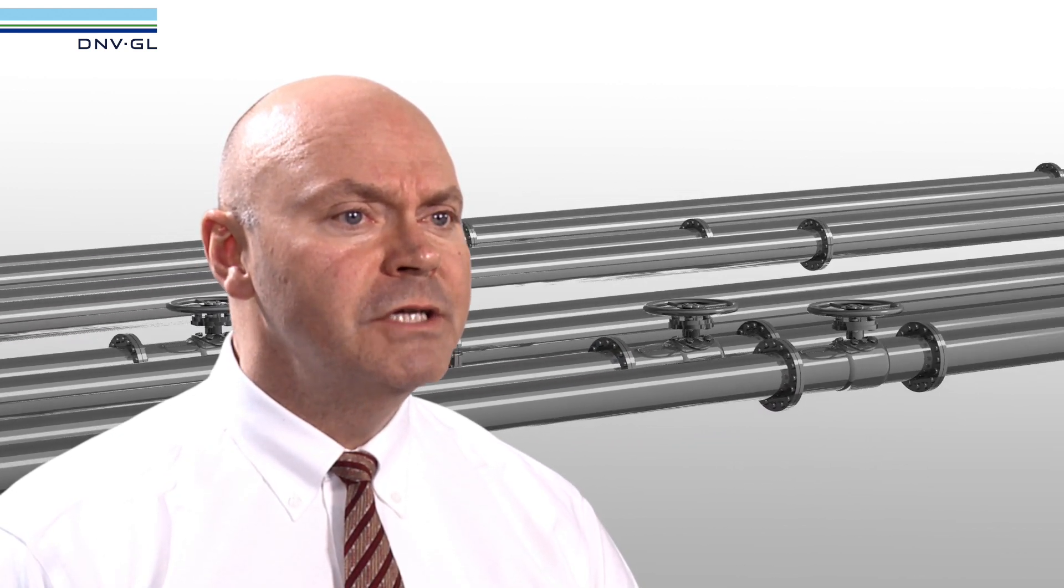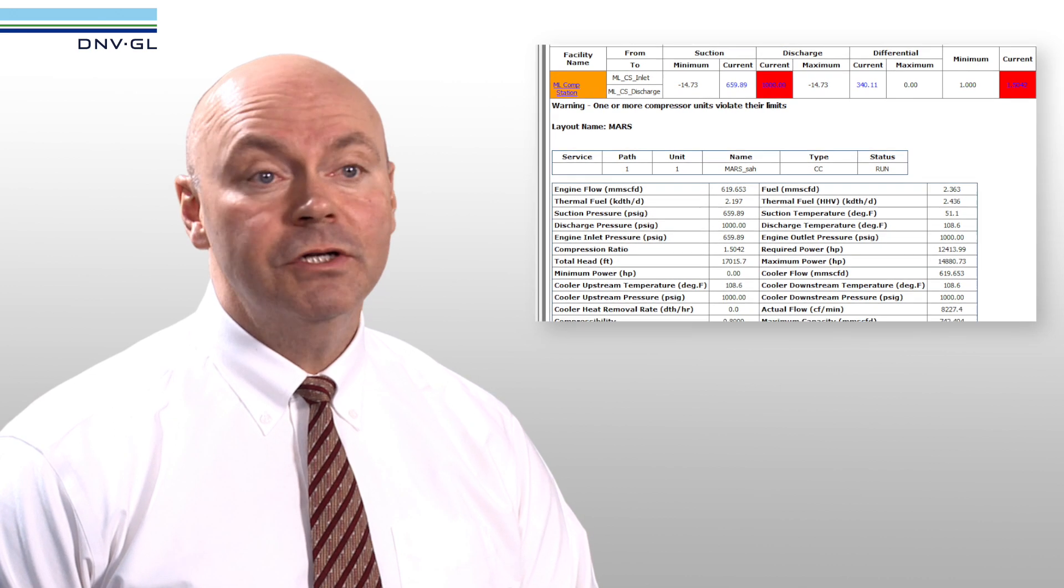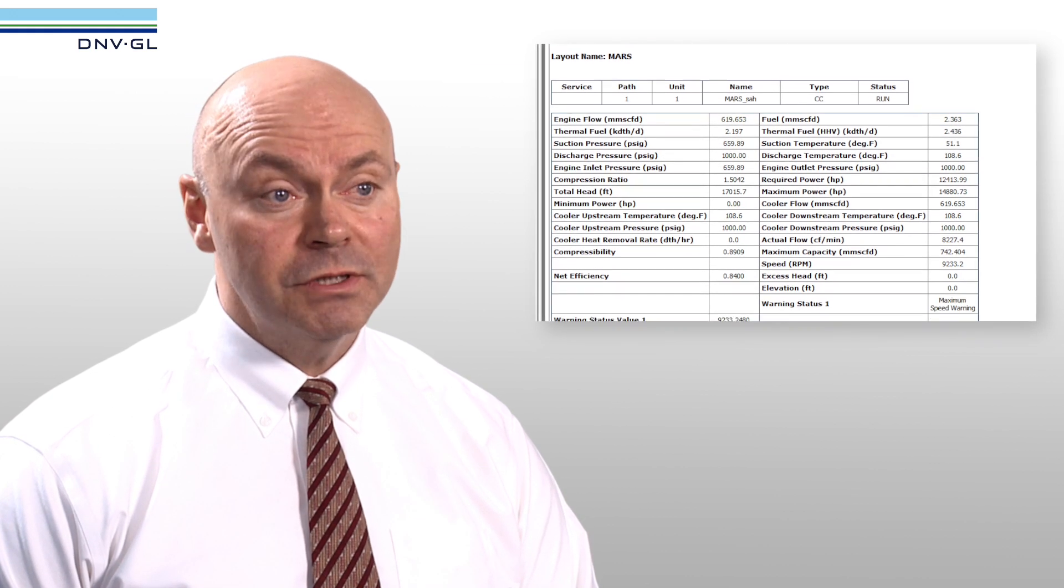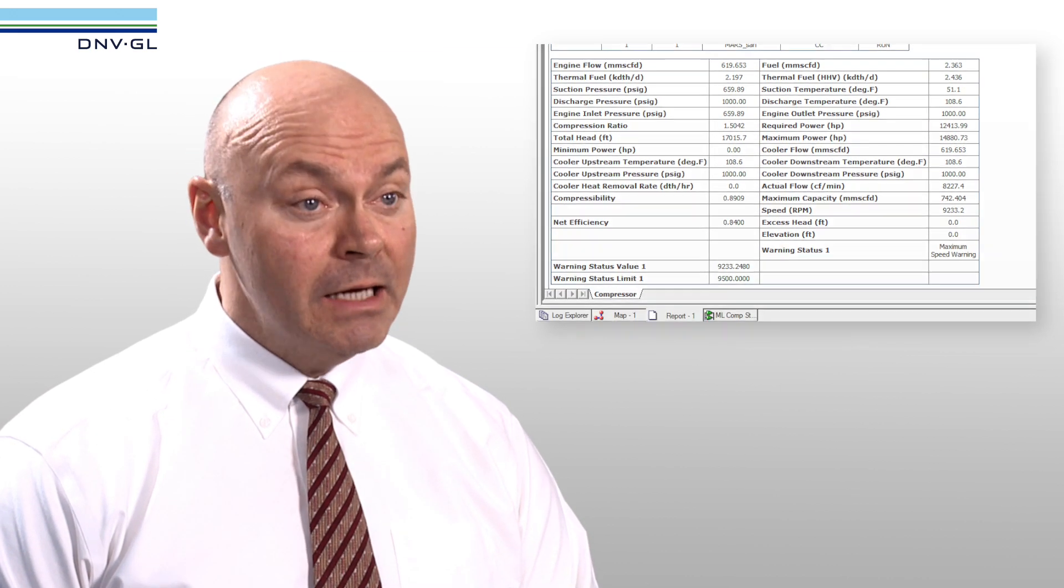Our customers get information that correlates two or more sources. You can see interactions that may not have been clear. As an example, a report can show system-wide pressure effects of isolating a portion of the gas network and a list of affected customers.